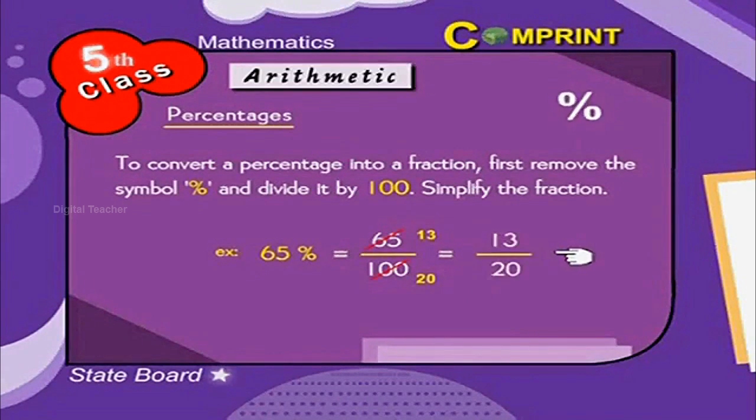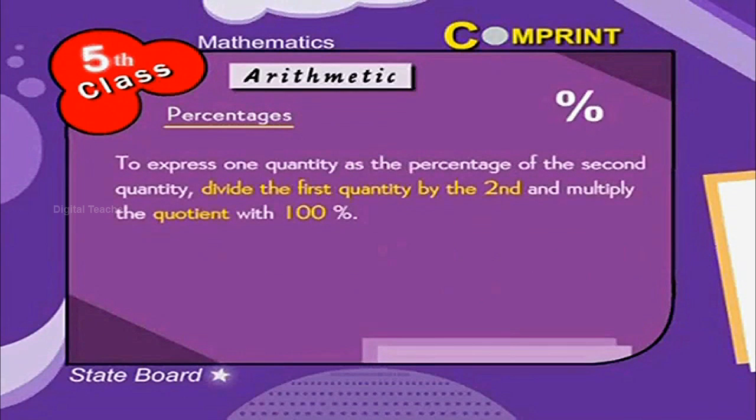To express one quantity as the percentage of the second quantity, divide the first quantity by the second and multiply the quotient with 100%.